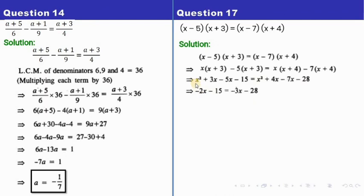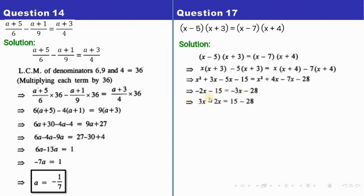Now x² and x² are on opposite sides with the same sign, so they cancel. On the left: 3x minus 5x is minus 2x, and minus 15 remains. On the right: 4x minus 7x is minus 3x, and minus 28 remains. Taking 3x to the left and minus 15 to the right: 3x minus 2x is x, and 28 minus 15 is... wait — minus 28 plus 15 is minus 13. So x equals minus 13.